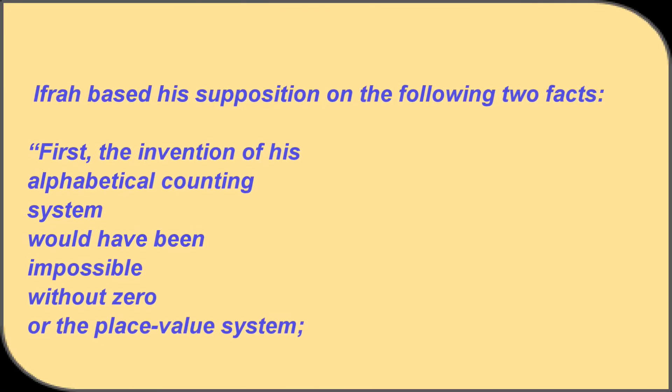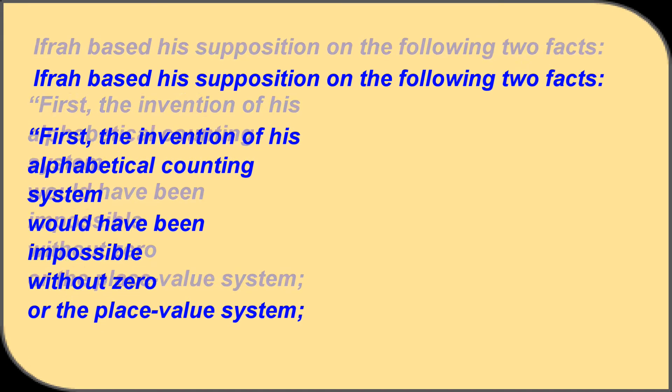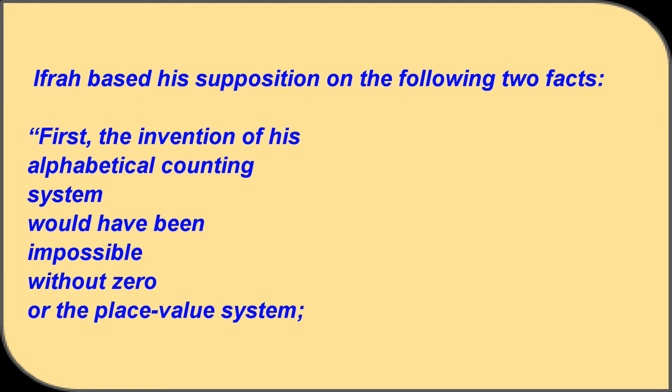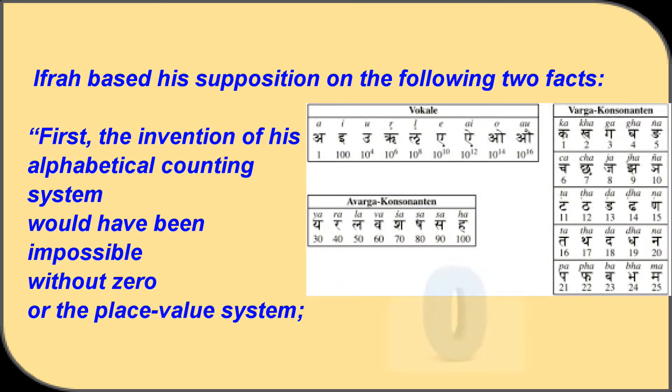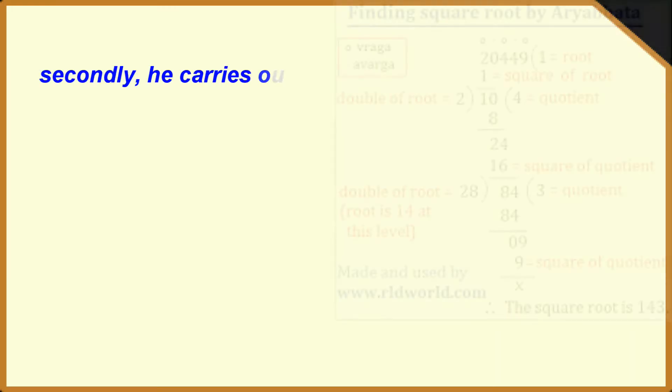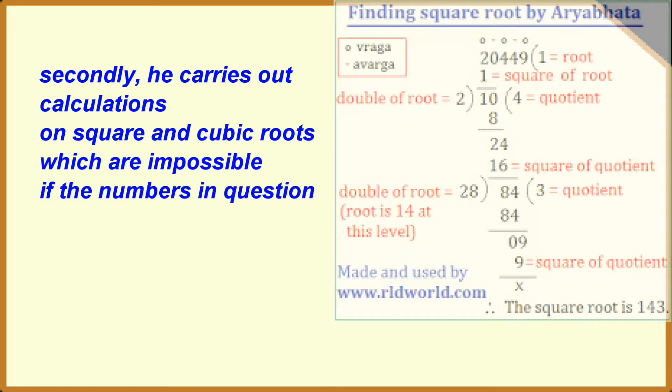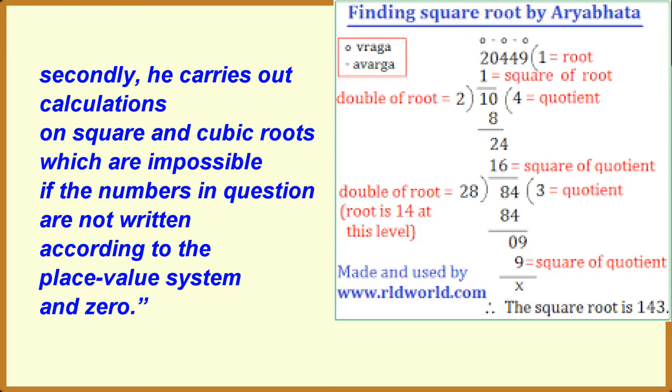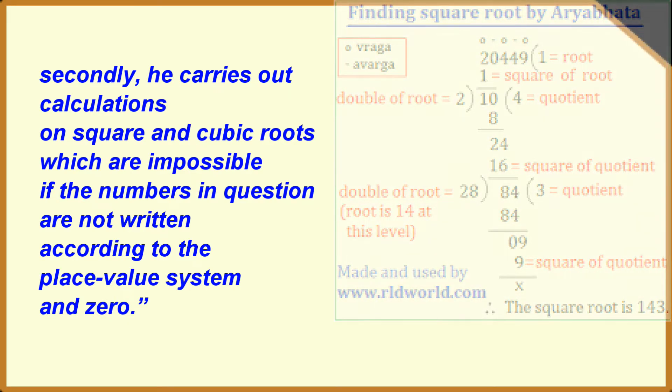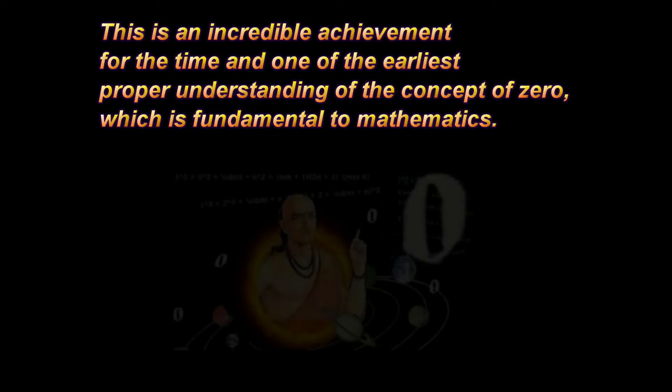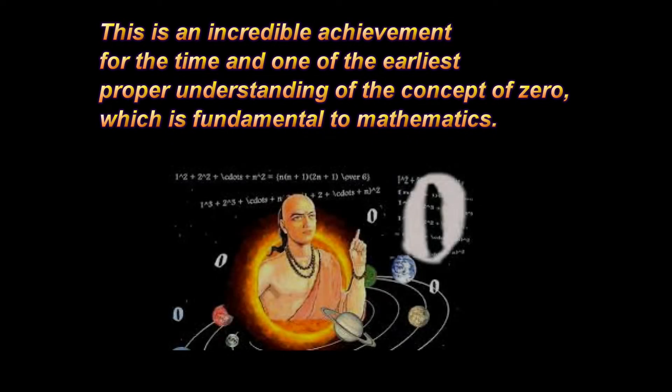Ifra based his supposition on the following two facts. First, the invention of his alphabetical counting system would have been impossible without zero or the place value system. Secondly, he carries out calculations on square and cubic roots which are impossible if the numbers in question are not determined according to the place value system and zero. This is an incredible achievement for the time and one of the earliest proper understandings of the concept of zero, which is fundamental to mathematics.